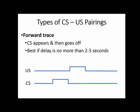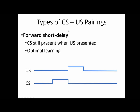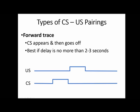The same idea applies as with the short delay — there should be an overlap or very brief gap. The best outcome here is if the delay is no more than two or three seconds; they should be very, very close together. The closer, the better. The longer the delay, the less easy it is for the animal to associate the two things that have happened.